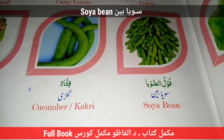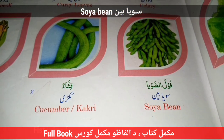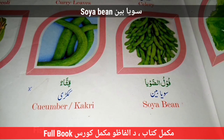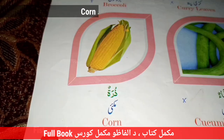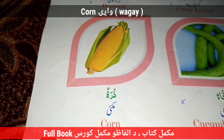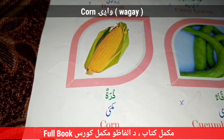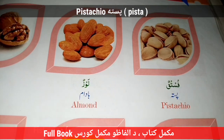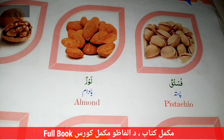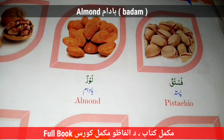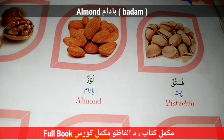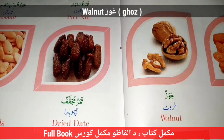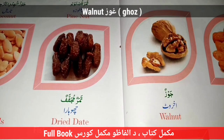Mushroom. Soya Bean. Corn — Wage. Pistachio — Pista. Almond — Badam. Walnut — Ghus.